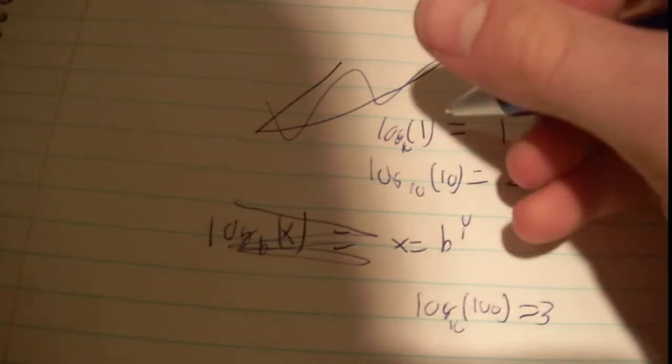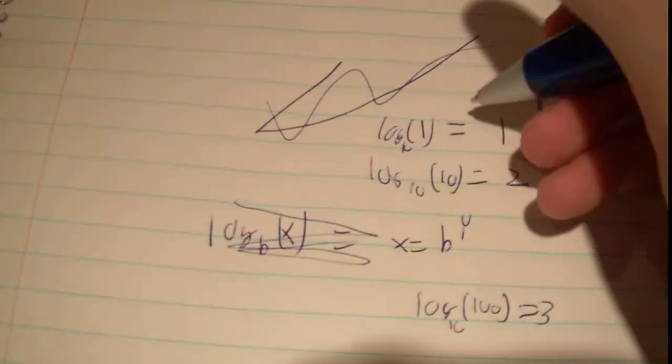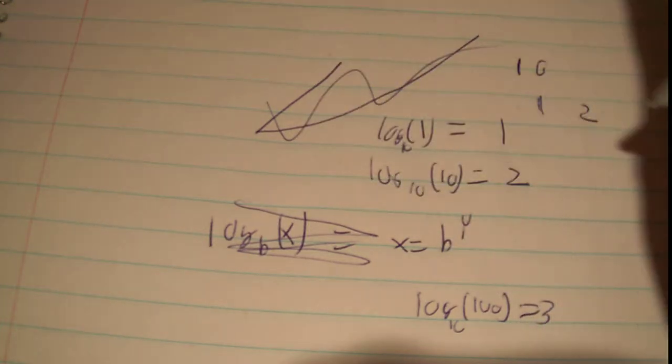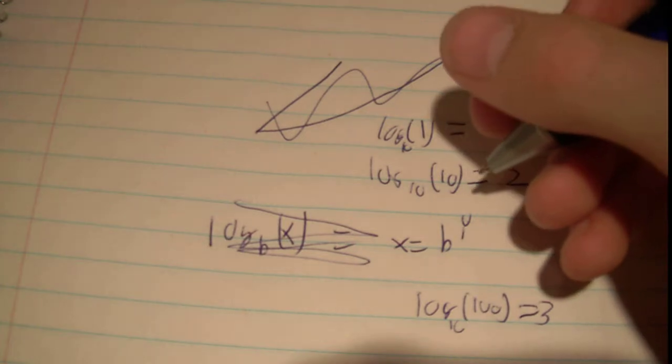You know, so 1 would be 1, 10 would be 2, 100 would be 3, 1,000 would be 4, etc., like that. So, 500 would be 3.5.